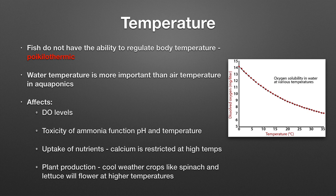Temperature: fish are poikilothermic, which basically just means they cannot regulate their body temperature — whatever temperature our water is, that's the temperature of the fish, and that really regulates their metabolism. So if your fish aren't eating and it's really cold outside, that's probably why — the water temperature is cold. Water temperature in aquaponics is more important than the actual air temperature. Temperature can affect dissolved oxygen levels, the toxicity of ammonia, and uptake of nutrients — calcium is restricted at high temperatures. Additionally, cool-weather crops like spinach and lettuce will actually flower or bolt at higher temperatures, which imparts a really bitter taste into those crops that may not be well-accepted by consumers.